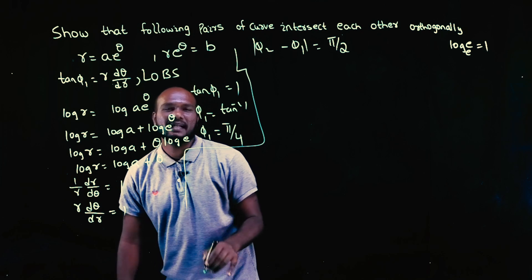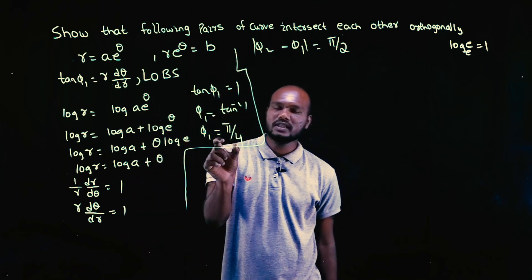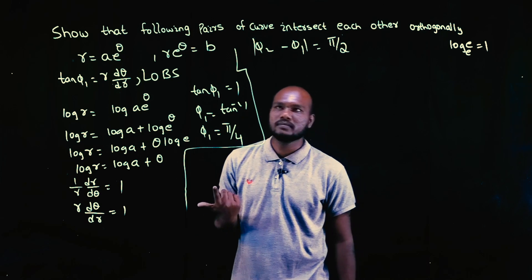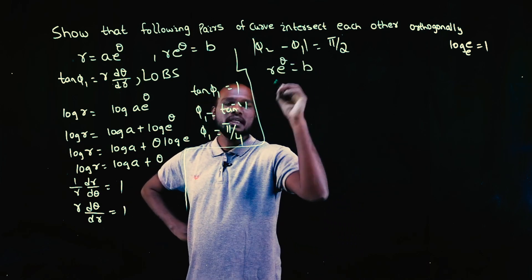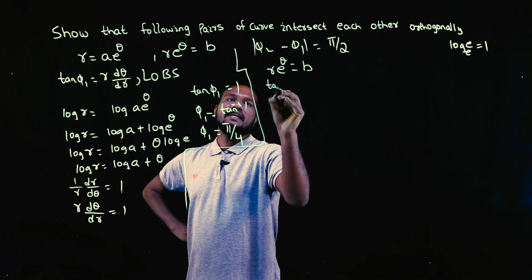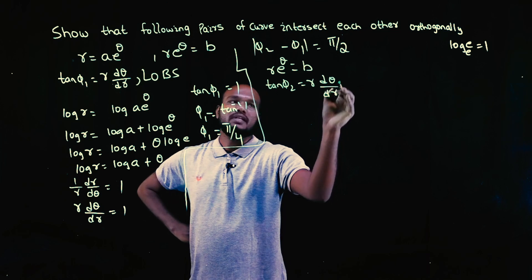Okay, let's go to the second one directly. We have got the value. What is the problem in last questions? We used to get in terms of theta; here we directly got the value. What is the problem? No problem, right? So the second equation is r times e^theta is equal to b. Again, what do we have to find? We have to try to find tan phi, that is r times d theta by dr.